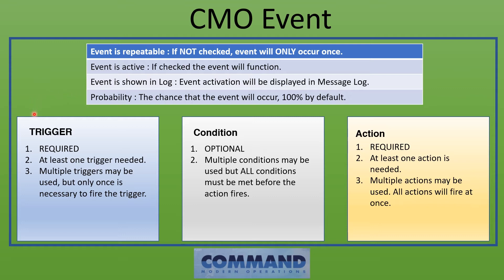Every event requires a trigger and an action. The condition is optional. You need at least one trigger, and you can have multiple triggers — any one of them will kick off the next part of the event. If there's a condition, it'll check whether it's met. Lastly is the action: what you're going to do. You need at least one action, and multiple actions can be present — all of them will fire at once.